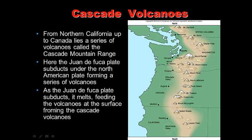Mount St. Helens is just one of many Cascade volcanoes. From northern California up to Canada lies a series of volcanoes including Mount Shasta, Crater Lake, Three Sisters, Mount Jefferson, Mount Hood, and Mount Rainier. All of these formed above a subduction zone at a convergent plate boundary, as the Juan de Fuca plate subducts under the North American plate and melts, feeding the Cascade volcanoes.